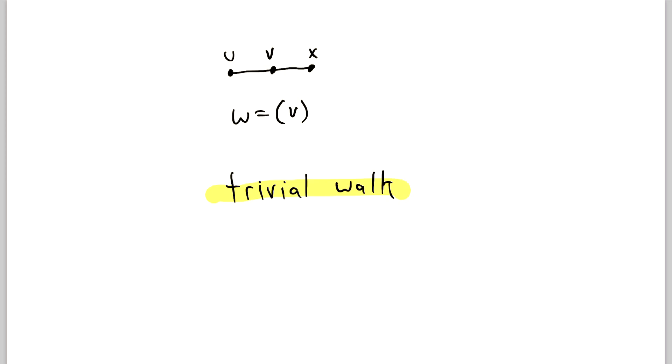This is called the trivial walk. It's a walk of length zero, because not a single edge is traversed during this walk. Now that sure is one heck of a walk. Trivial it may be, it is a walk.